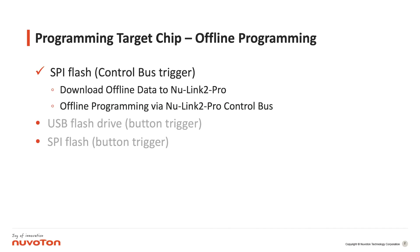This video introduces how to use NewLink 2 Pro to offline program a target chip. I'll first use the ICP programming tool to save the offline data to the embedded SPI flash on NewLink 2 Pro. Then, I'll use Control Bus to trigger the programming process to download the offline data from NewLink 2 Pro's embedded flash to the target chip.